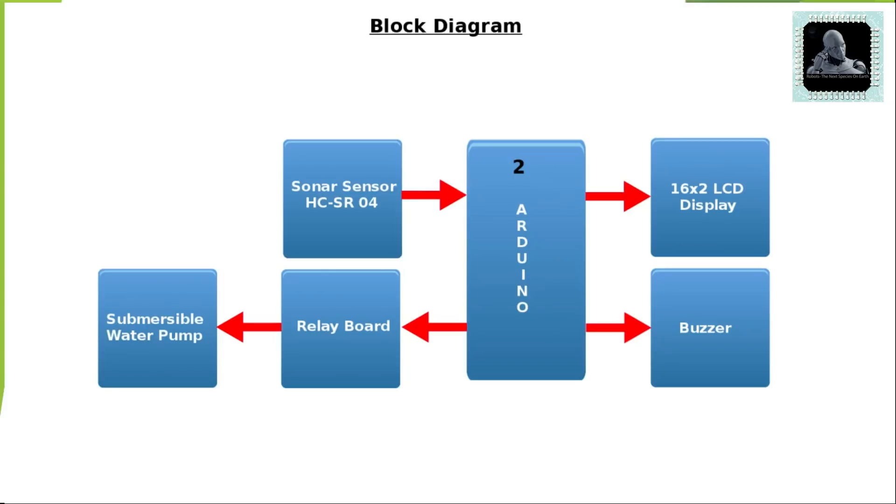The third block is the buzzer. We use this unit to make the project more user-friendly. This will produce buzzing sound while the water level is very low. The fourth block is the sonar sensor. This is mainly responsible for measuring the water level.